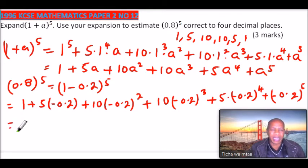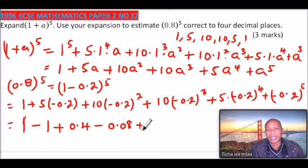Now here you can use your calculator. So when you multiply this using your calculator, you will be able to get 1, then plus 0.4 because (-0.2)^2 is positive, then minus 0.08, plus 0.008, then minus 0.0032. So that is that. And using your calculator, you will be able to get...